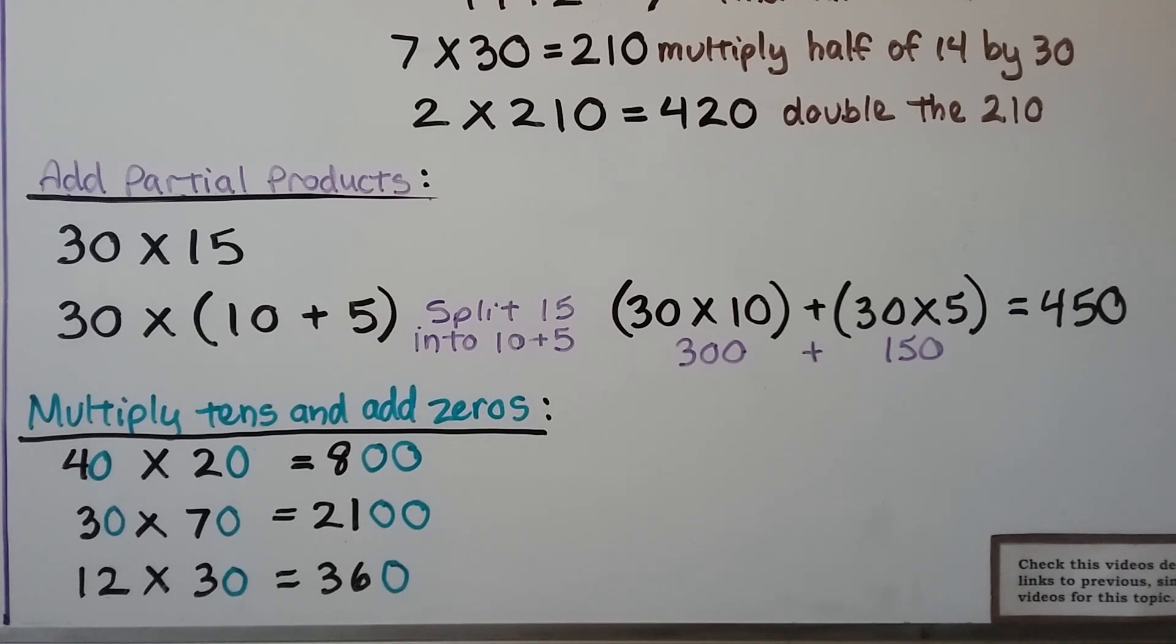We can also multiply 10s and add 0s. Here we have four 10s times two 10s. We multiply the 4 times the 2 and get an 8, and there's a 0 here and a 0 here, that's two 0s. And we just add the two 0s at the back end, and we have 800. So you could do 40 times 20 in your head. 30 times 70 would be a 3 times 7, which is a 21. There's a 0 and a 0. We add the two 0s to the back of the 21, and we have 2,100. We can even do it if one of them is not 10s like these are. If we did 12 times 30, we could do 12 times 3, which is 36, and add that one 0 onto the back end, and we have 360.